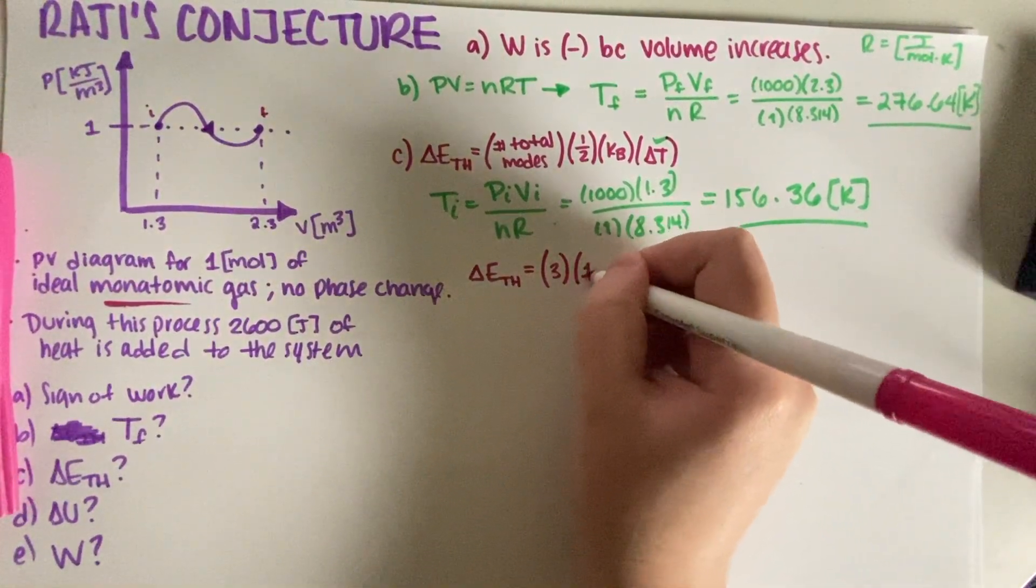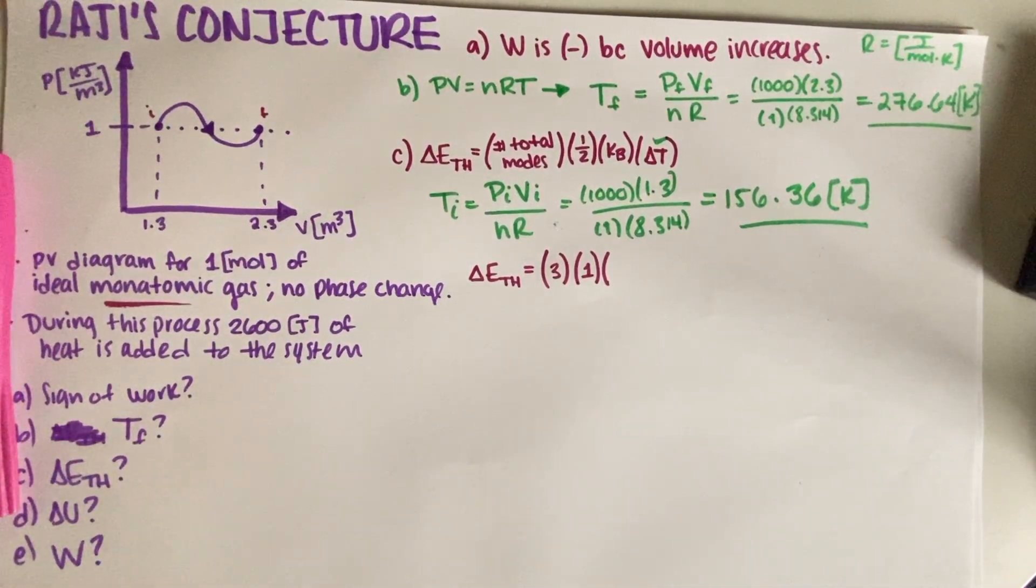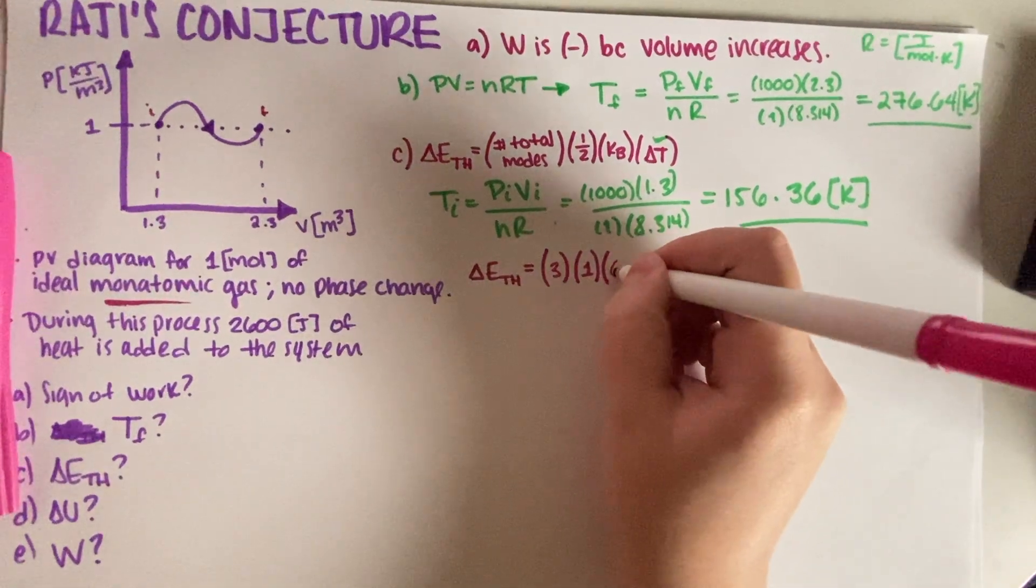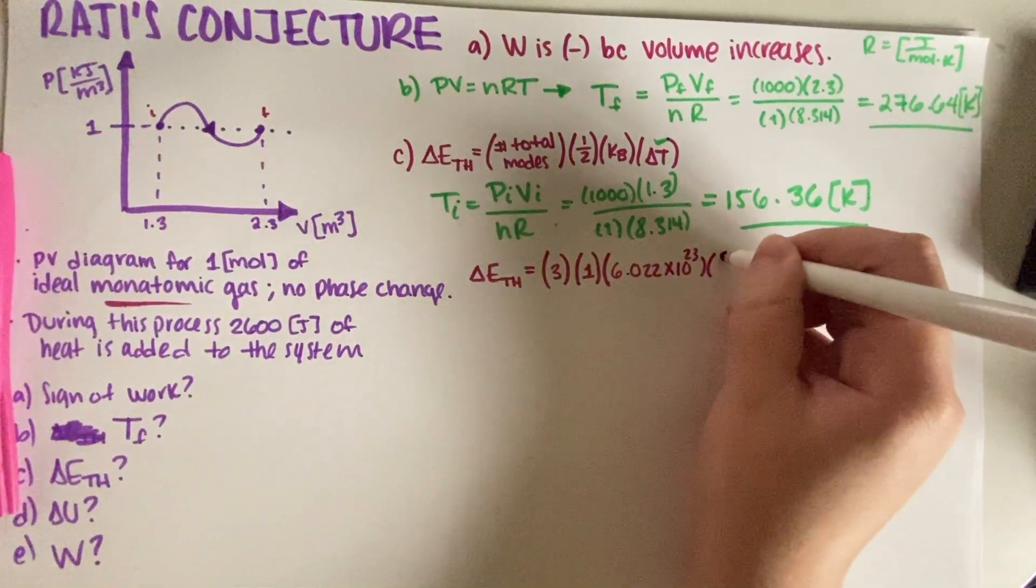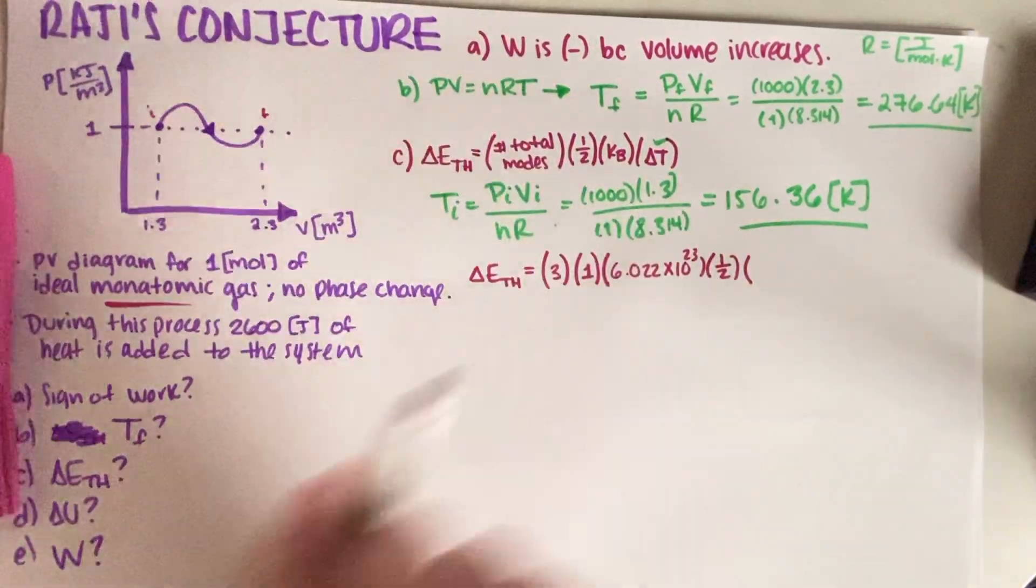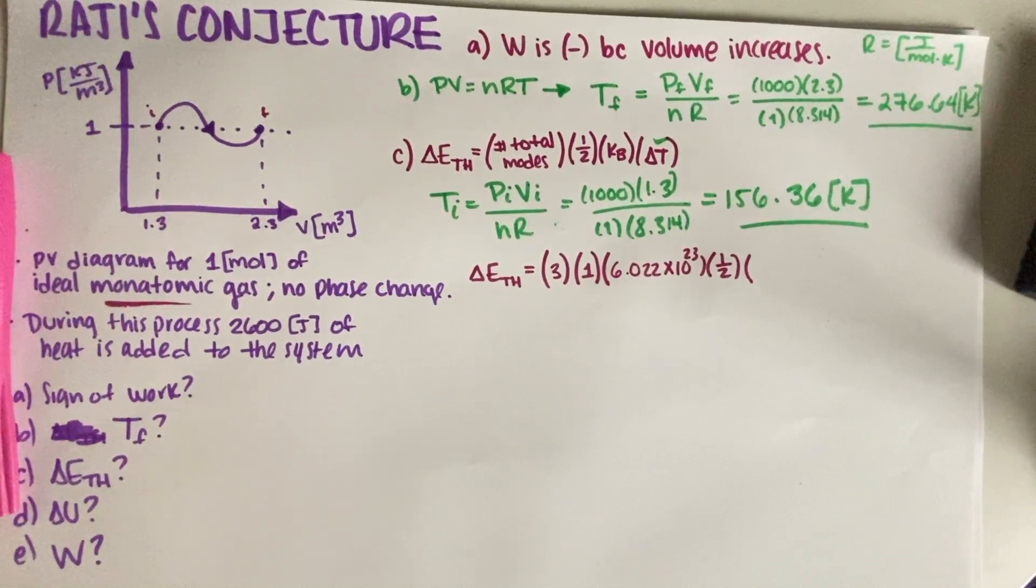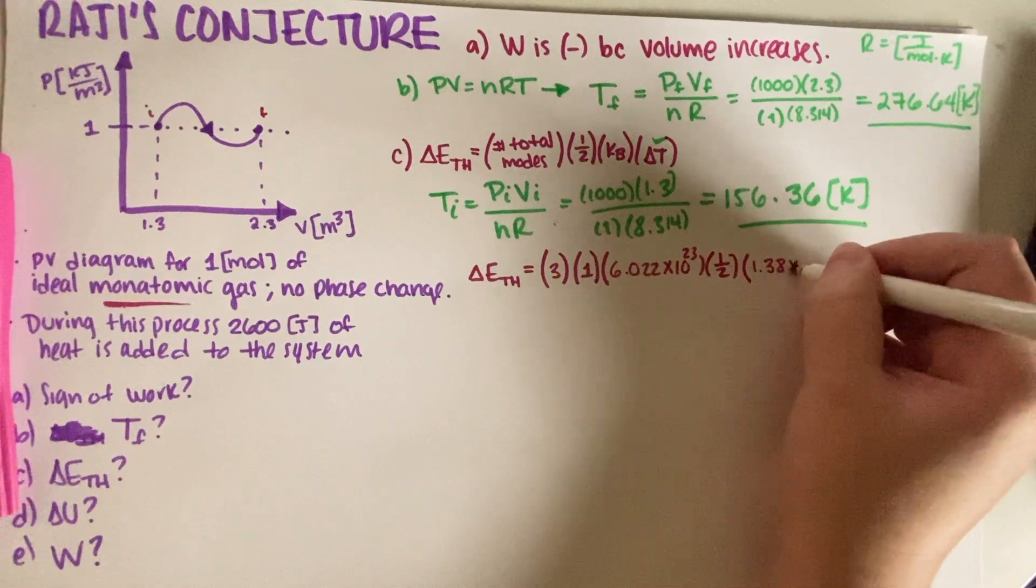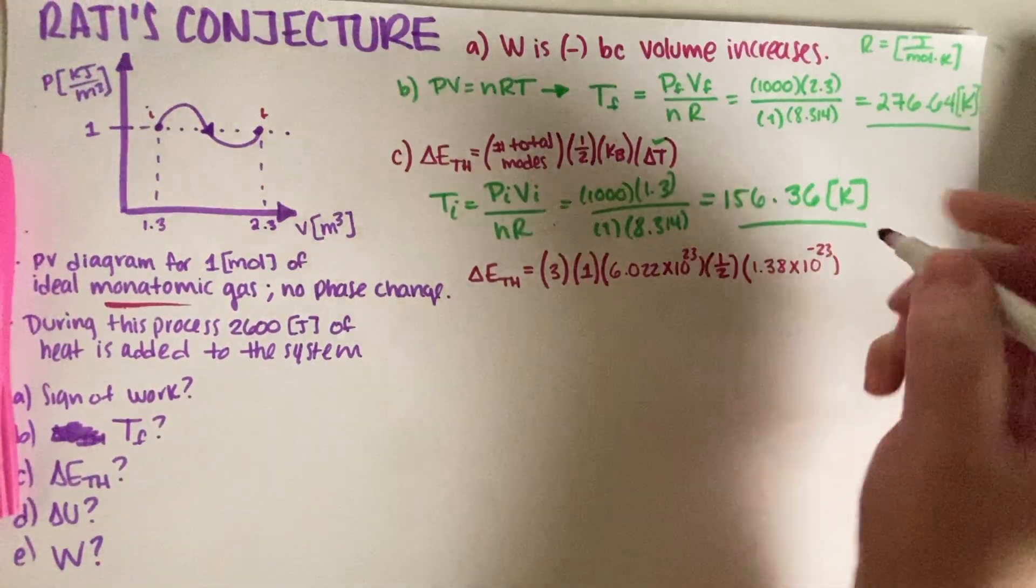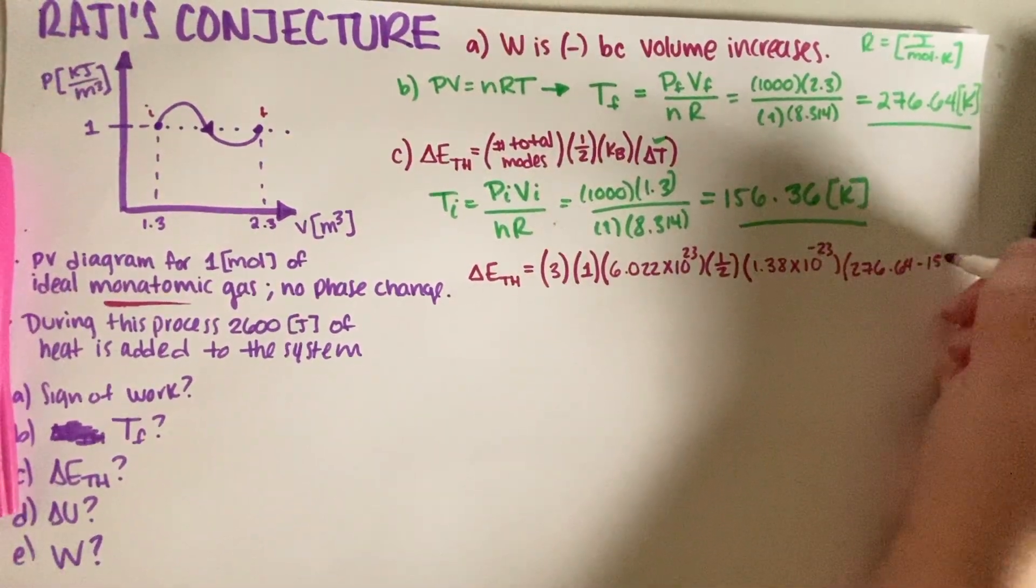So, monatomic gas only has three moles, three thermal moles, that's the kinetic translational moles. So, this is three. And then we have one mole, and the number of atoms is Avogadro's number. And Avogadro's number, I will have to look it up. Avogadro's number, 6.022 times 10 to the 23. And then this is 1.5, just because of the 1.5 kV. And also, this isn't the quiz. I just don't have the quiz at hand. 1.38 times 10 to the negative 23. And then delta T, which is final minus initial, so 276.64 minus 156.36.